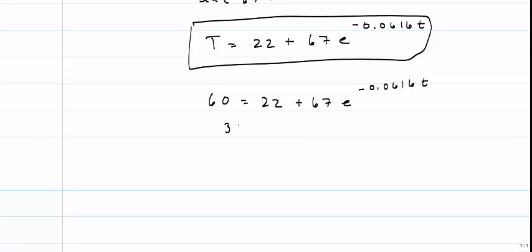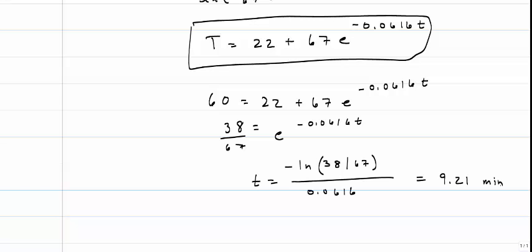So now I'm going to solve for t. I'll have to take the natural log of both sides again and then divide both sides by negative 0.0616, and I come up with 9.21 minutes. That is, after 9.21 minutes, the coffee should be approximately 60 degrees, and Bob will be happy to drink it then.